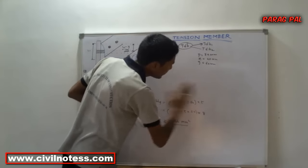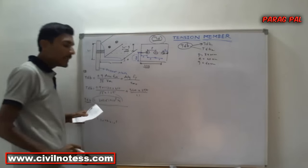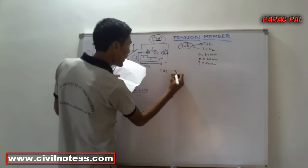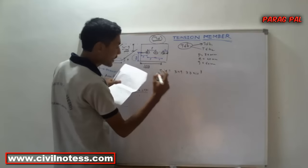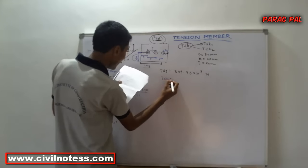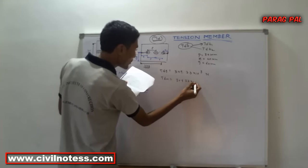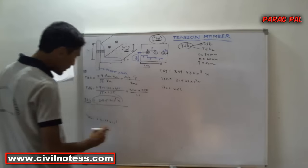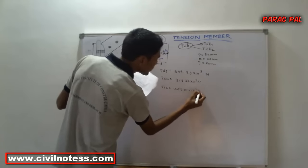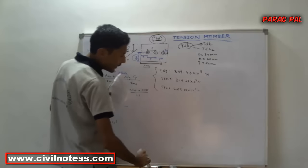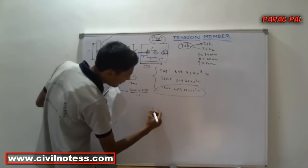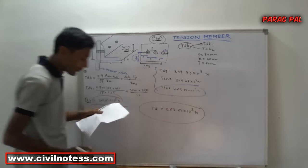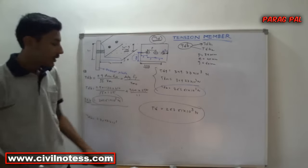We now have all three values as per IS code: Tdg = 349.77 × 10³ N (from Part 1), Tdn = 309.27 × 10³ N (from Part 1), and Tdb = 263.61 × 10³ N. The least of these three values governs, so Td = 263.61 × 10³ N. This is the design tensile strength of the member.